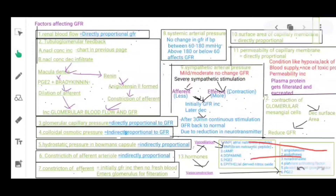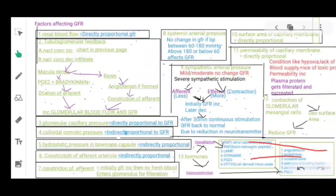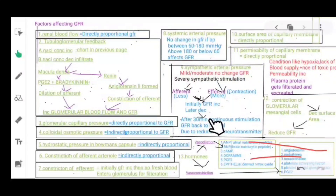Eleventh: permeability of the capillary membrane — the more permeable the membrane, the more filtrate is produced, so it is directly proportional to GFR. In conditions like hypoxia, lack of blood supply, or presence of toxic products, permeability increases and plasma proteins get filtrated and excreted. Twelfth: contraction of glomerular mesangial cells — this decreases the surface area and reduces GFR.